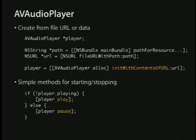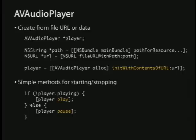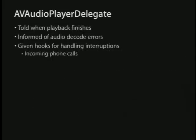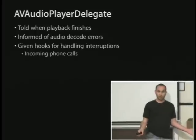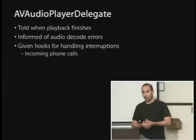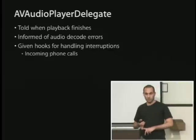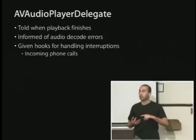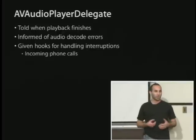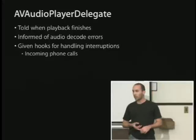Here's an example: get a path from your bundle, turn it into a URL, then call `initWithContentsOfURL` to get an AV Audio Player. You can start, pause, or change the current time. Set yourself as delegate and you'll get callbacks for playback done, playback stopped, and decode errors such as a poorly encoded MP3.